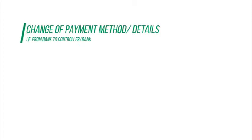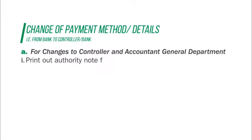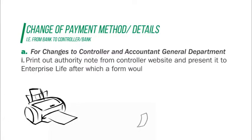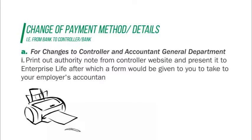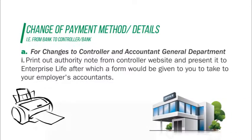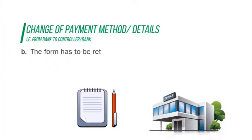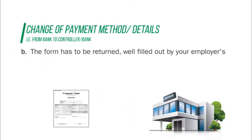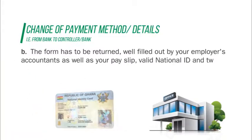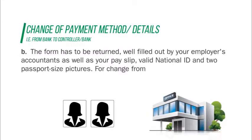Change of payment method — for example, from bank to Controller: for changes to Controller and Accountant General Department, print out an authority note from the Controller website and present it to Enterprise Life, after which a form will be given to you to take to your employer's accountant. The form must be returned well filled out by your employer's accountant, along with your pay slip, valid national ID, and two passport-size pictures.